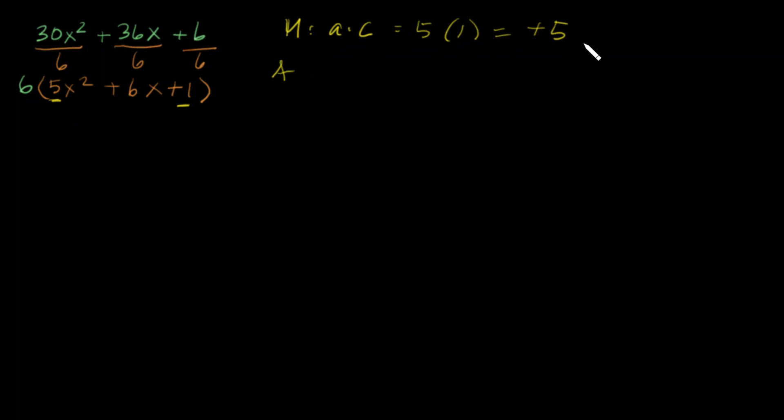Now add the factors of 5. So the factors of 5—there's only 1 and 5—it's going to have to equal positive 6, which is the B term. So the factors of 5 that equal 6 is 1 and plus 5.